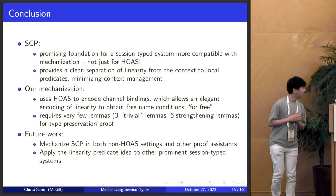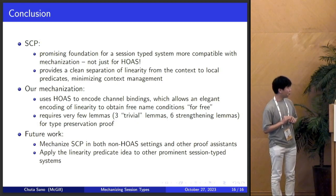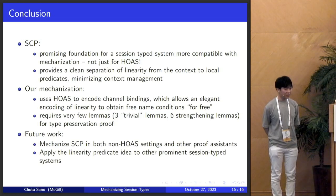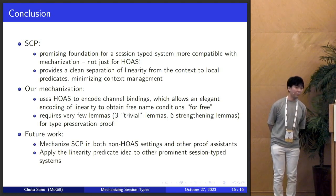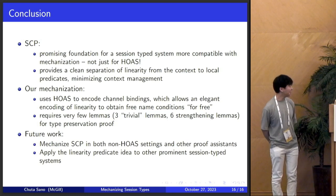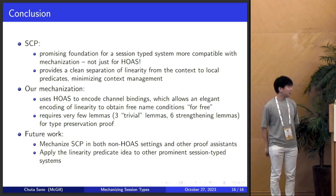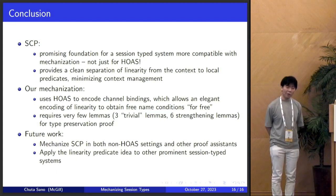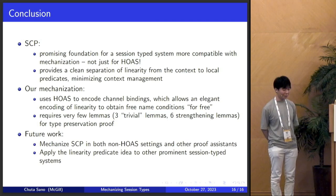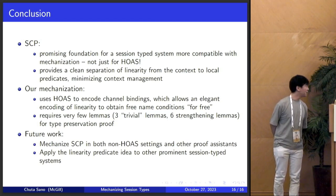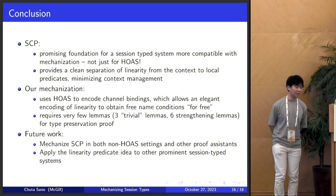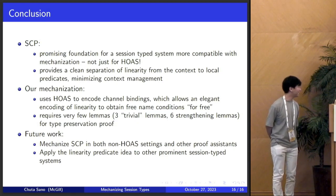Our mechanization uses HOAS to encode channel bindings, and the biggest strength we showcased is getting free name conditions for free. The type preservation proof required only nine additional lemmas — remarkably small compared to how it's usually done. In fact, a colleague mechanized CP by explicitly managing contexts, and the last I heard he had 90 lemmas just to deal with the linear context. So linear contexts are quite difficult to work with.